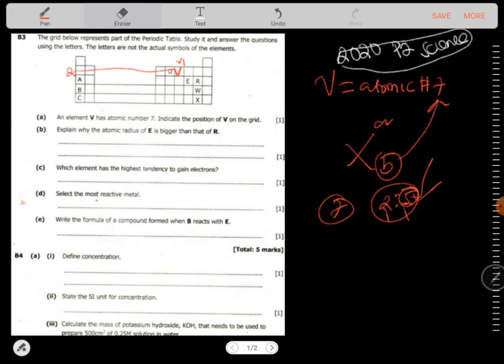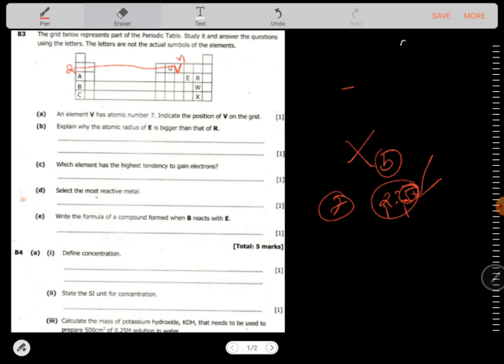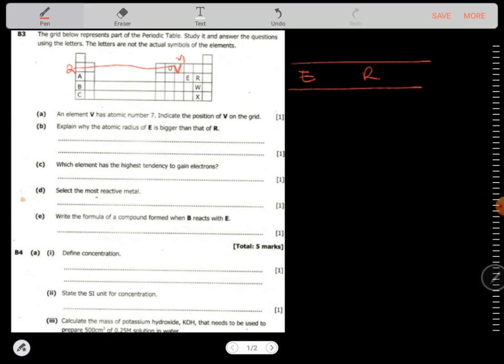You can see it's group 5, it's here, and period 2 is here. Period is the number of shells. The group is the number in the outermost shell, number of electrons. Then we have another one which says explain why the atomic radius of E is bigger than R. When you look at where E is and where R is, you can tell that of course they're in the same period but they're in different groups. This one is in group 6 or this one is in group 7.